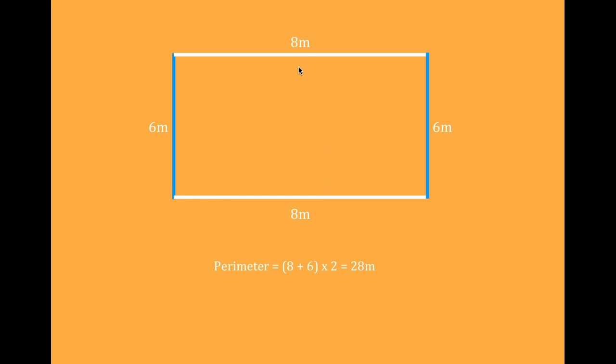So in this case 8 plus 6 plus 8 plus 6. Or to make it slightly easier we can add two of the sides, 8 and 6, and then double it. That will give us the length of the other sides.